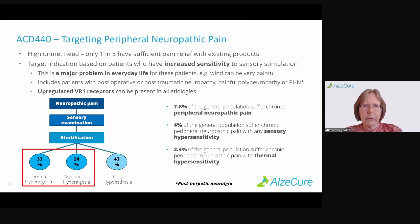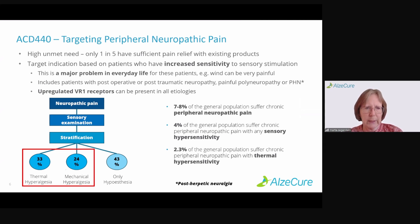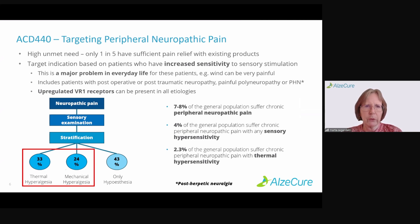If you want to target peripheral neuropathic pain, you need to look at subgroups of patients — I mentioned phenotypes at the beginning of this talk. Only one in five patients has sufficient pain relief with existing products. The target indication for us is patients who have increased sensitivity to sensory stimulation, such as cold or heat. These problems may seem minor, but they are major problems in everyday life for these patients — a draft of wind can be very painful, or taking a shower because it's hot.